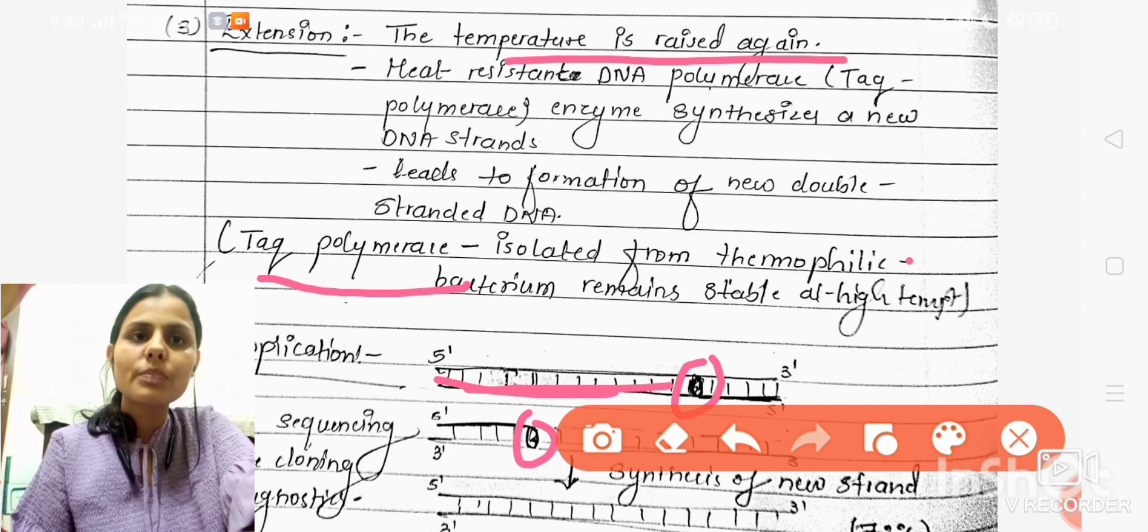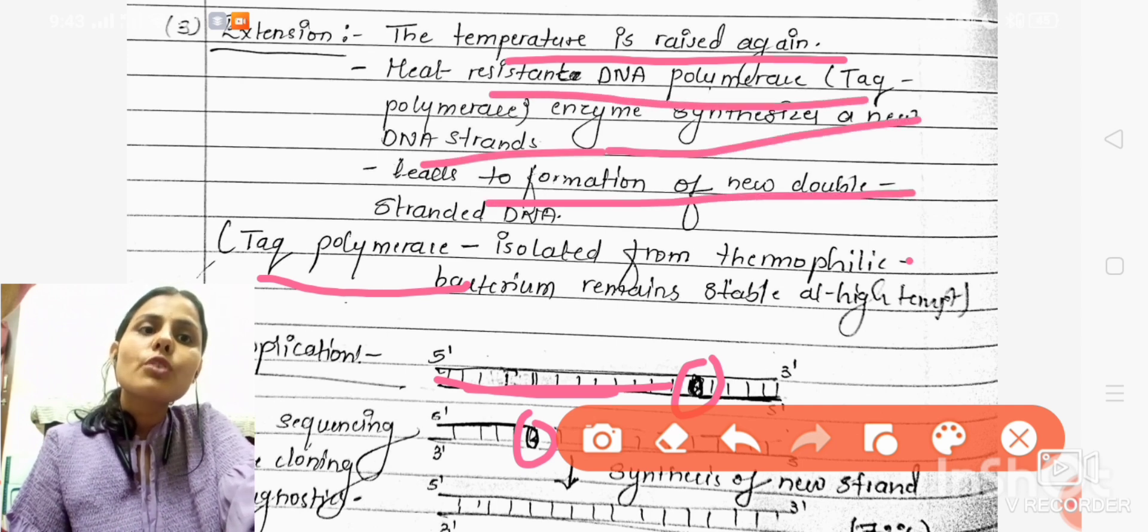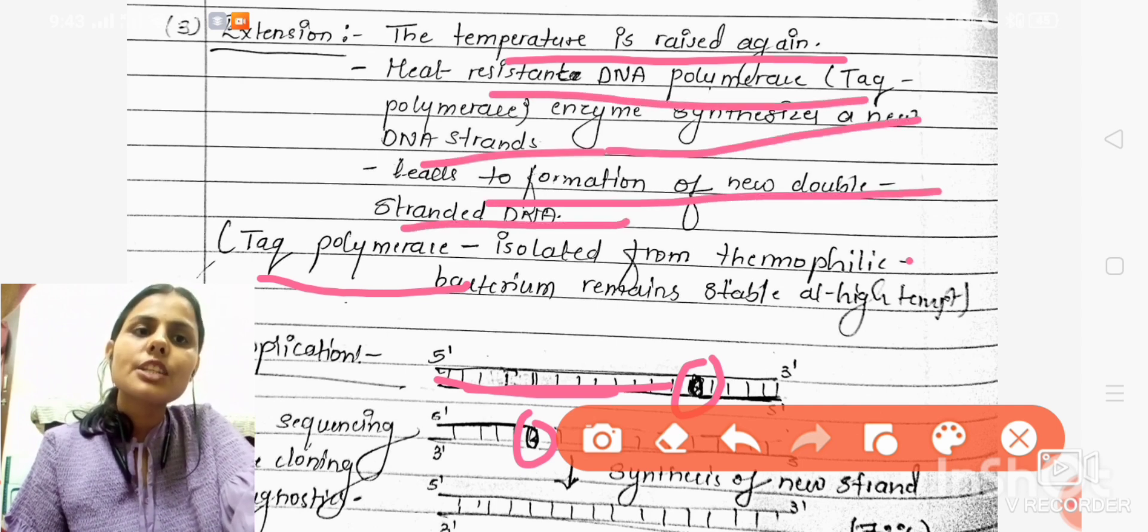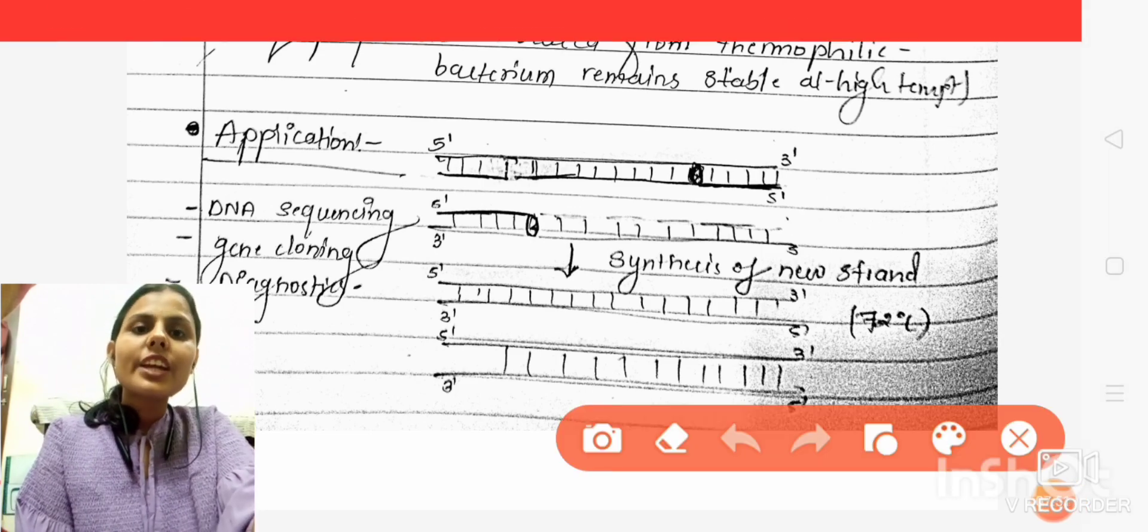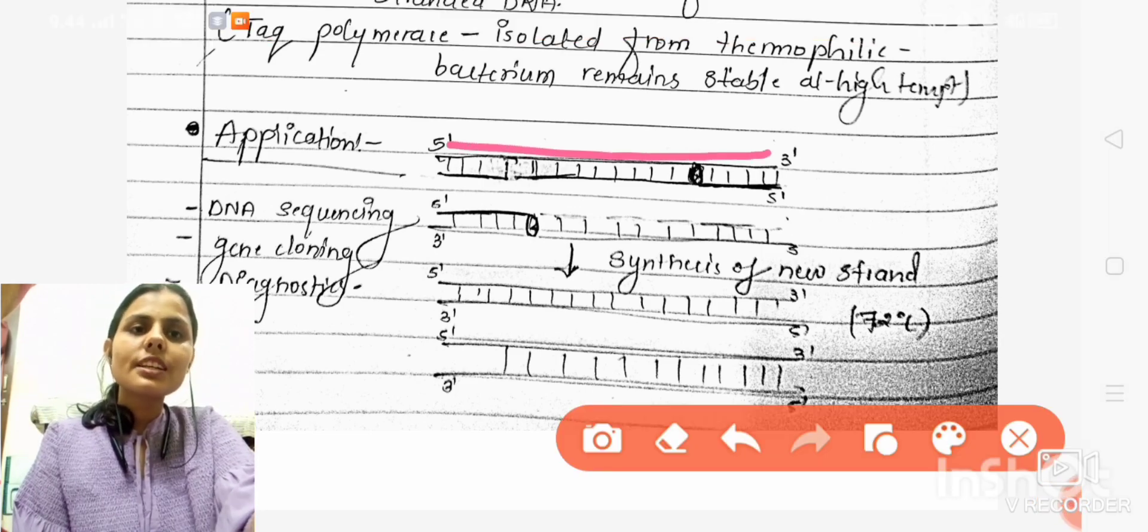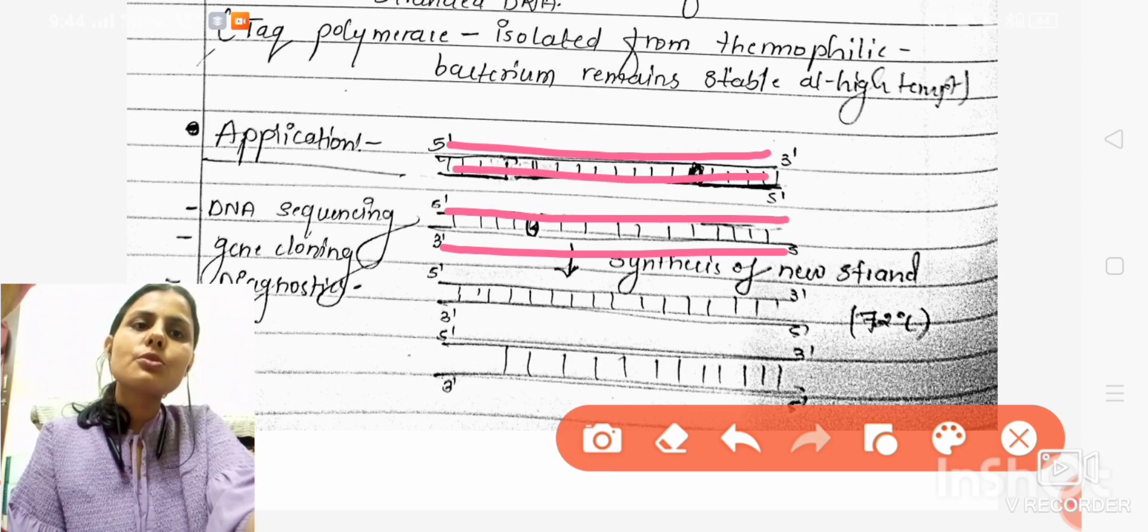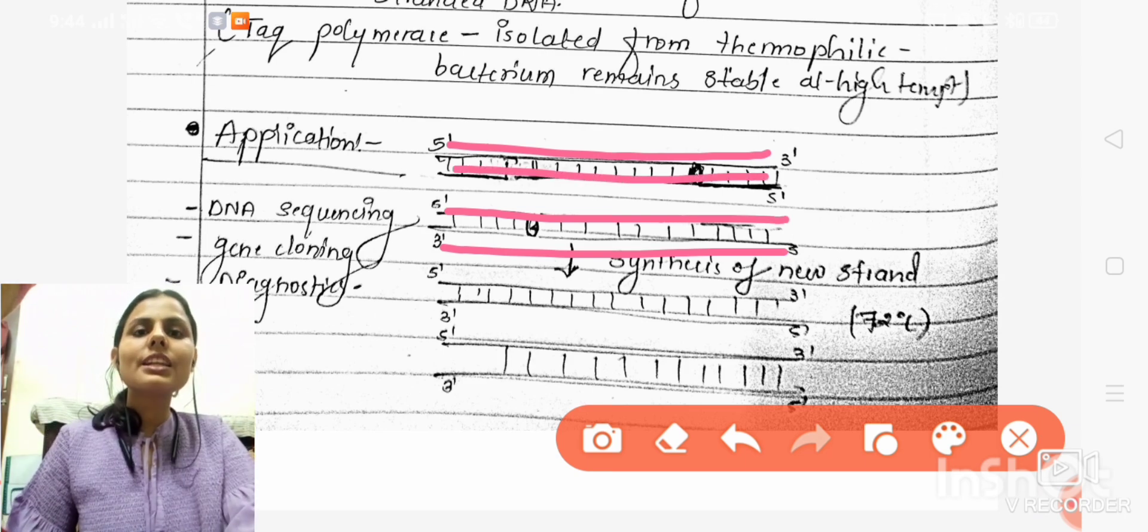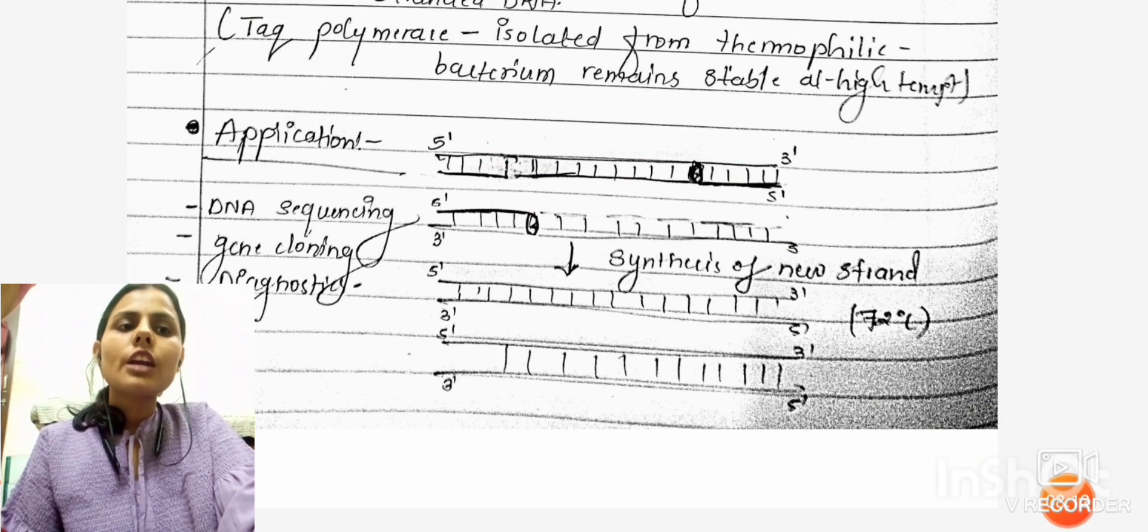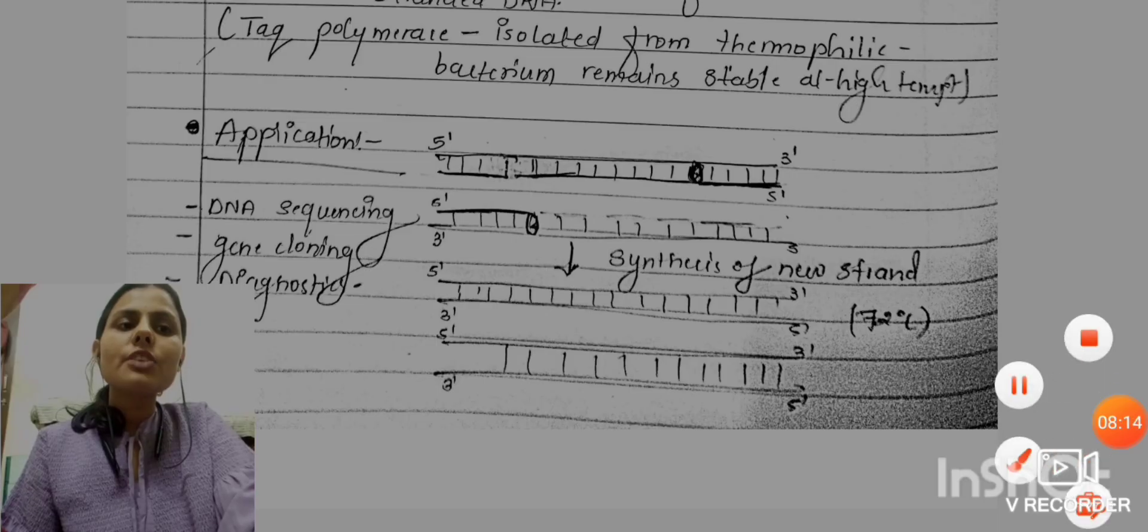The heat-resistant Taq polymerase leads to the formation of new double-stranded DNA sequences. These were the single-stranded DNA and now there is synthesis of new strands. By using this, we can make multiple copies of the DNA.